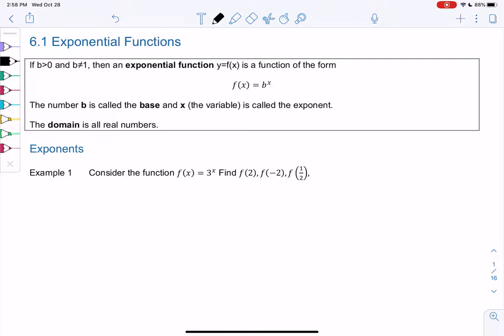Section 6.1, exponential functions. If b is greater than 0 but not 1, then an exponential function y equals f of x is of the form f of x equals b to the x.